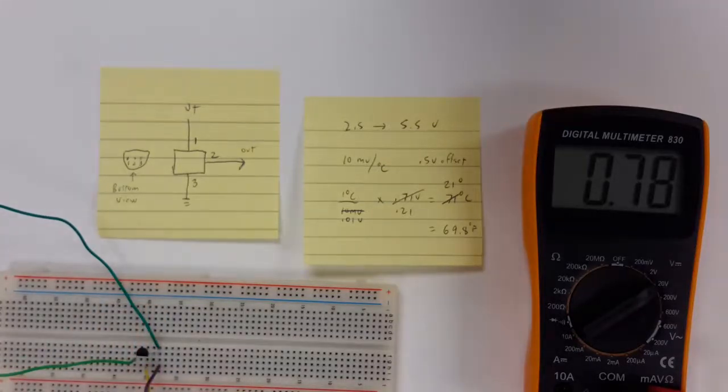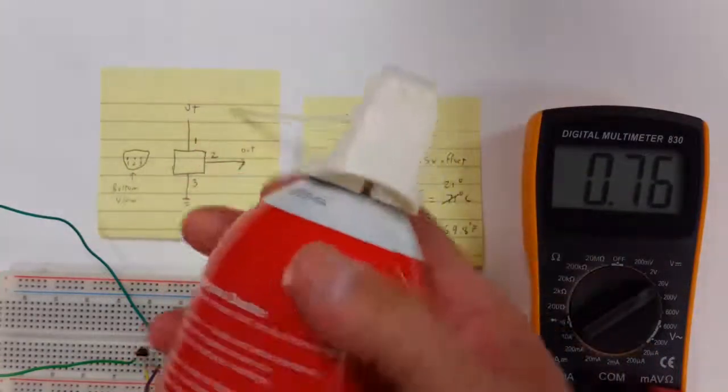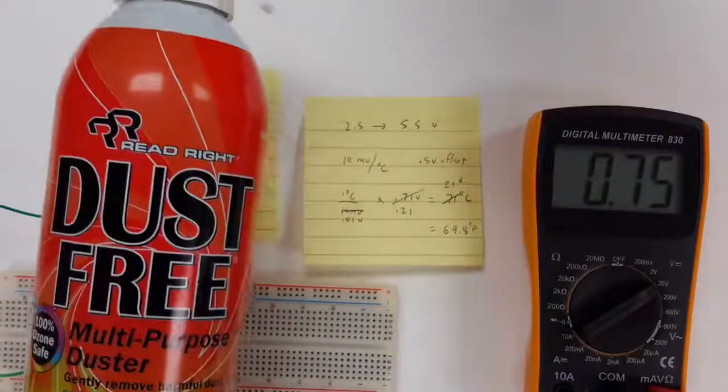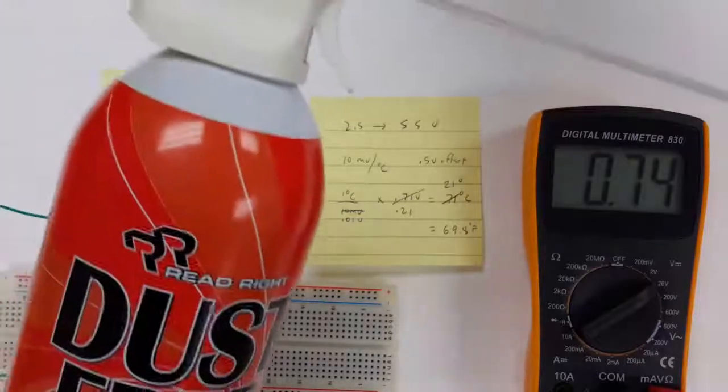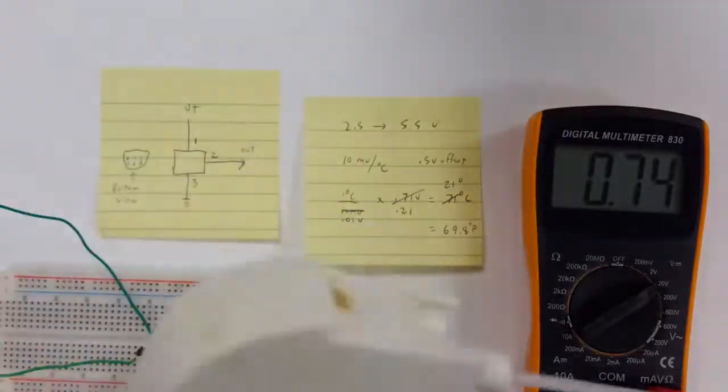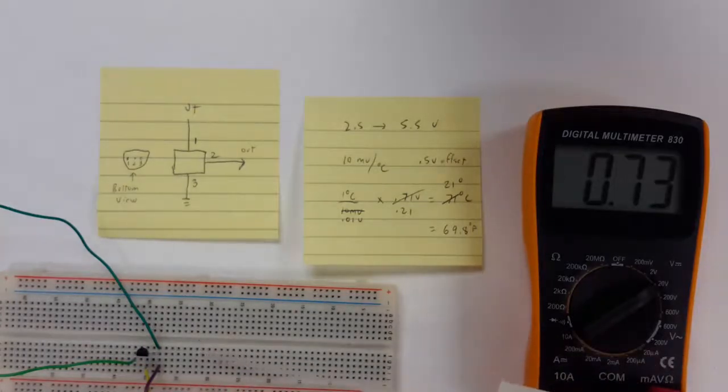One way to tell how it does for cold is to take a can of this dust free spray coolant. This is really just refrigerant in a can. And if you hold it upside down, it will actually spray a really cold liquid, really cold refrigerant.